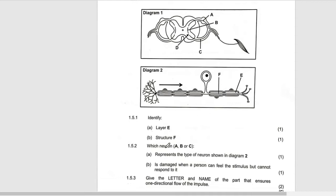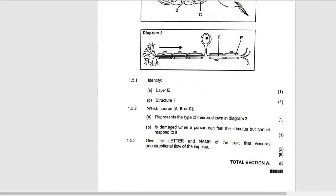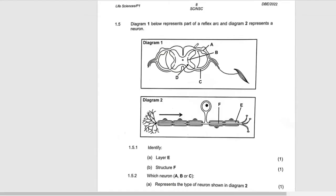Which neuron ABC represents the type of neuron shown in diagram two? Because the cell body is along the neuron, it's going to become the sensory neuron. So it's going to become the sensory neuron, which is A.